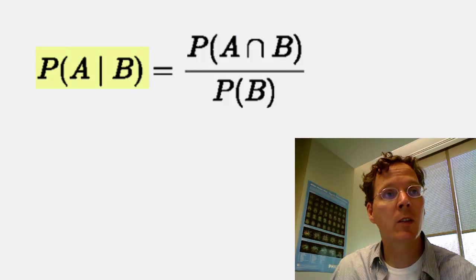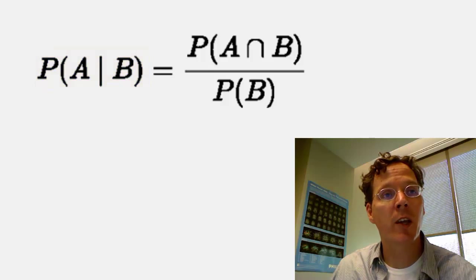The probability of A, little horizontal line, B, so this is read probability of A given the event that B has occurred, is equal to the probability of the intersection divided by the probability of B.